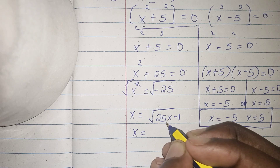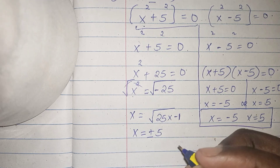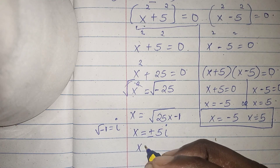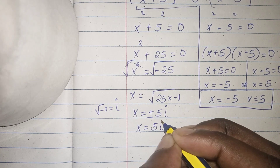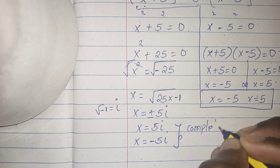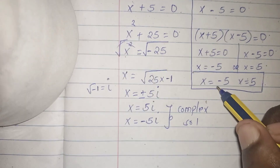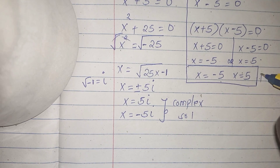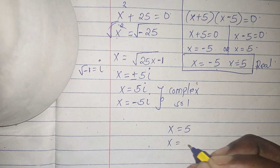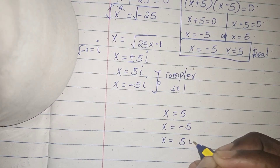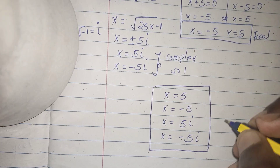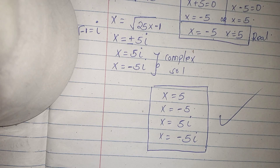We get x equals plus or minus 5, and the square root of negative 1 is imaginary. So from this we have two complex solutions: x equals positive 5i or x equals negative 5i. Combined with our real solutions x equals 5 and x equals negative 5, all four values of x are: x = 5, x = -5, x = 5i, and x = -5i. Remember to like, subscribe, and comment below. Don't forget to share with your learning colleagues — bye bye, see you in my next video!